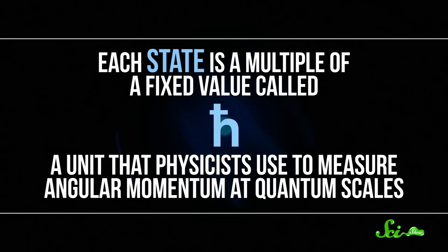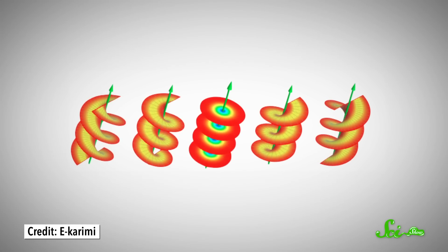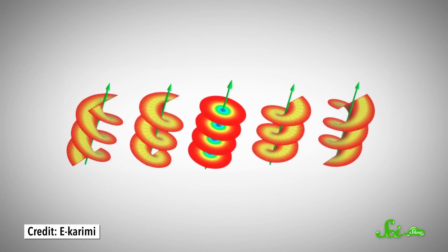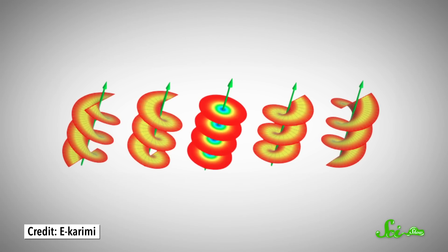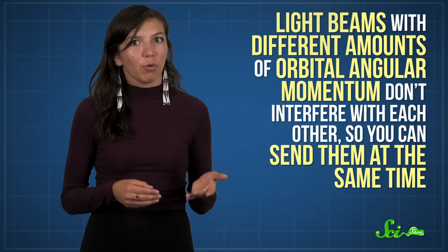The thing is, even though lots of things have orbital angular momentum, light is a sort of special case, thanks to quantum mechanics. Since the properties of light are defined at subatomic scales, light has quantum mechanical properties. All you need to know about that is that it means light can't just have any old amount of orbital angular momentum—it can only carry certain fixed amounts, known as states. Each state is a multiple of a fixed value called h-bar, a unit that physicists use to measure angular momentum at quantum scales. So a light beam might carry 1 h-bar, 2 h-bar, or 3 h-bar, and so on. And since the wavefront can rotate clockwise or counterclockwise, the beams can actually have positive or negative values of those numbers. What's useful about those states is that each one can be used to represent a piece of data. And light beams with different amounts of orbital angular momentum don't interfere with each other, so you can send them at the same time. That means, for each new state you add, you can hold more data—and the number of states you can have is technically infinite.